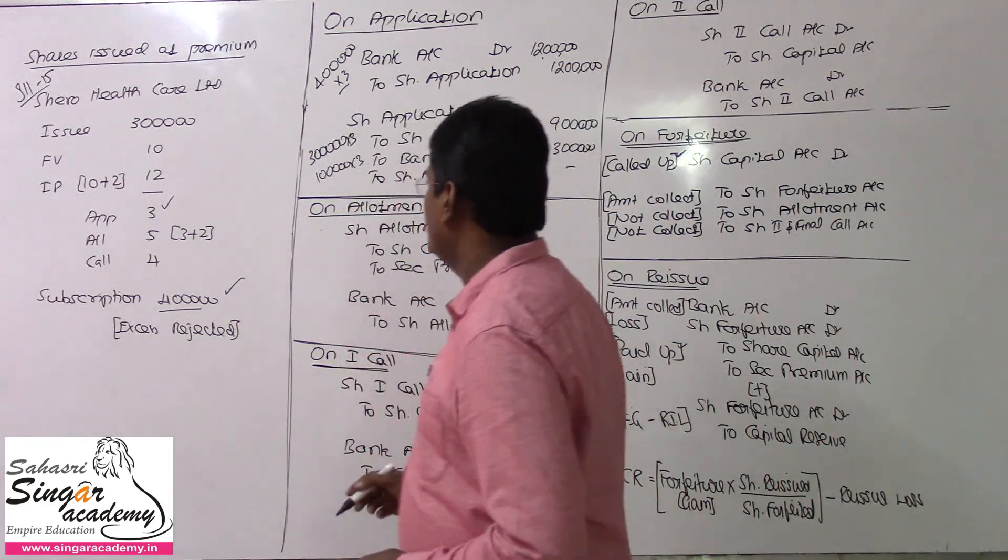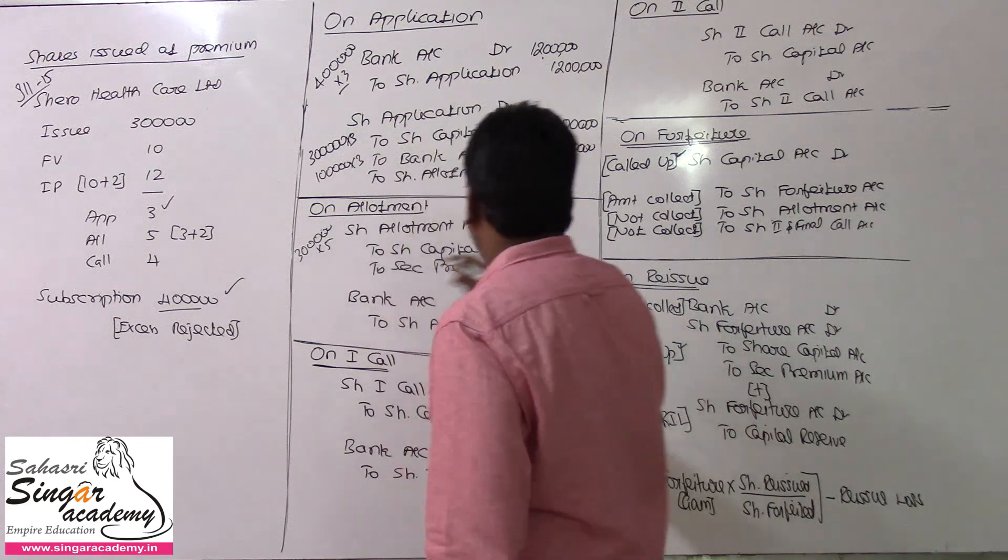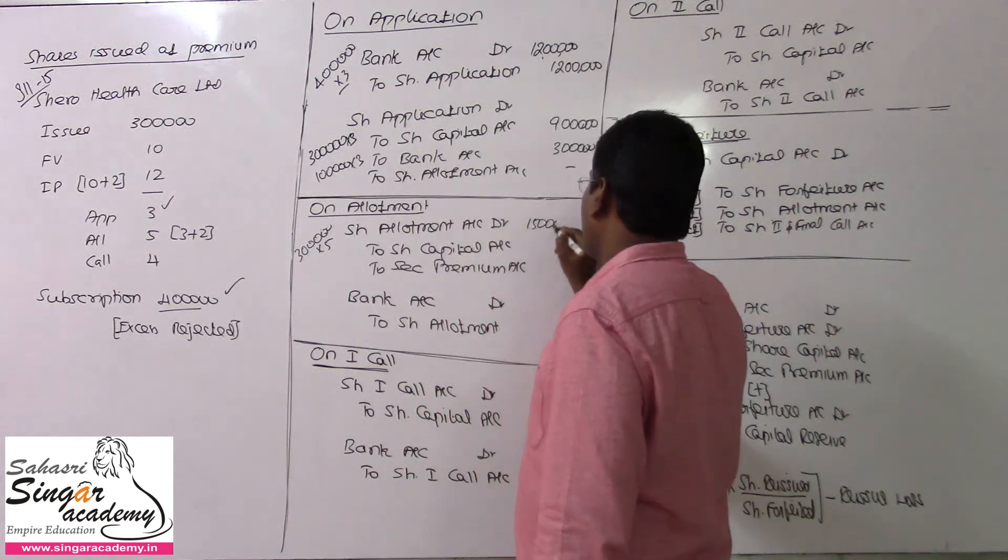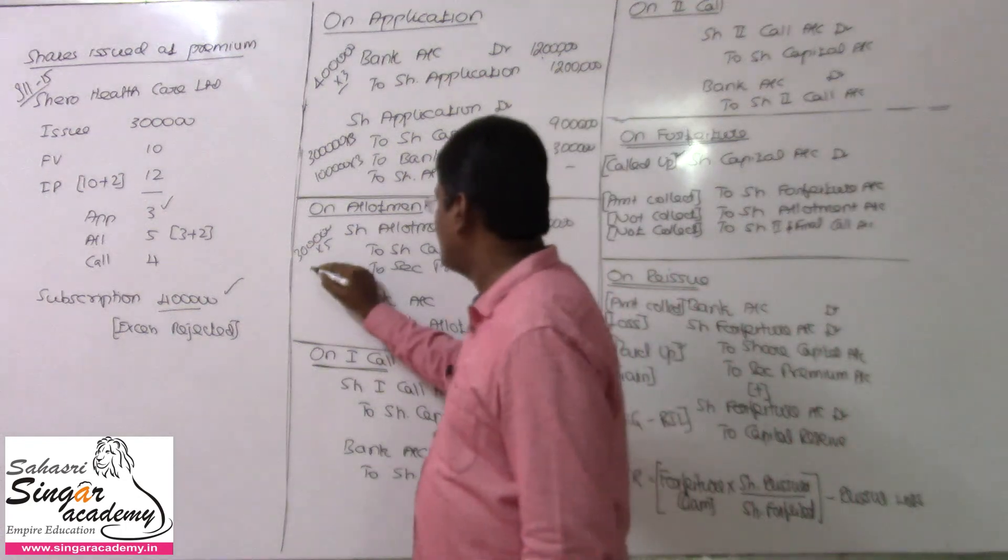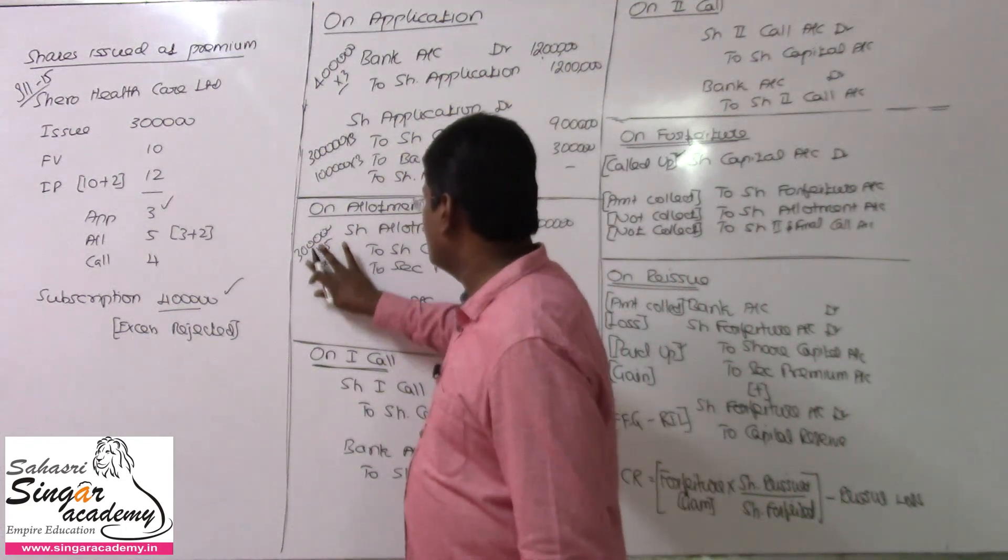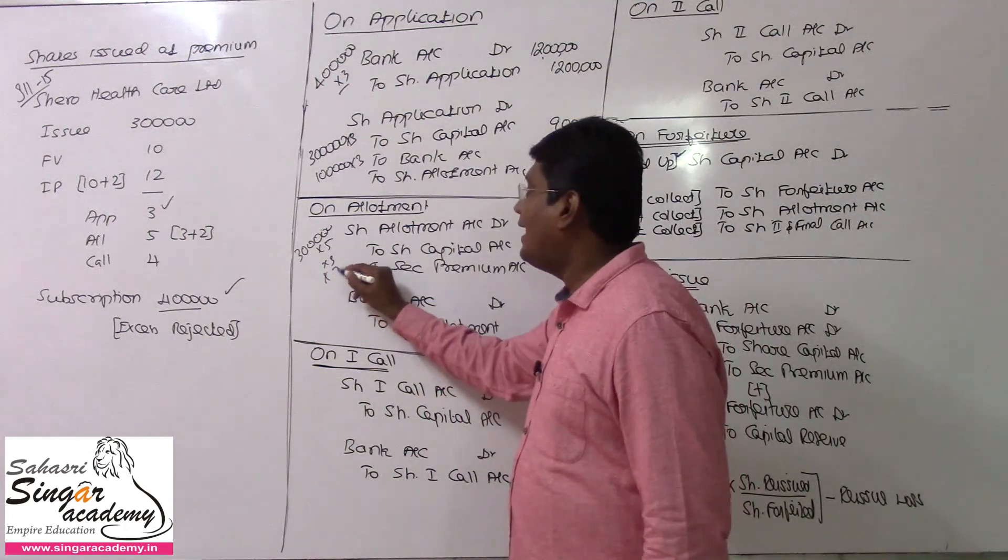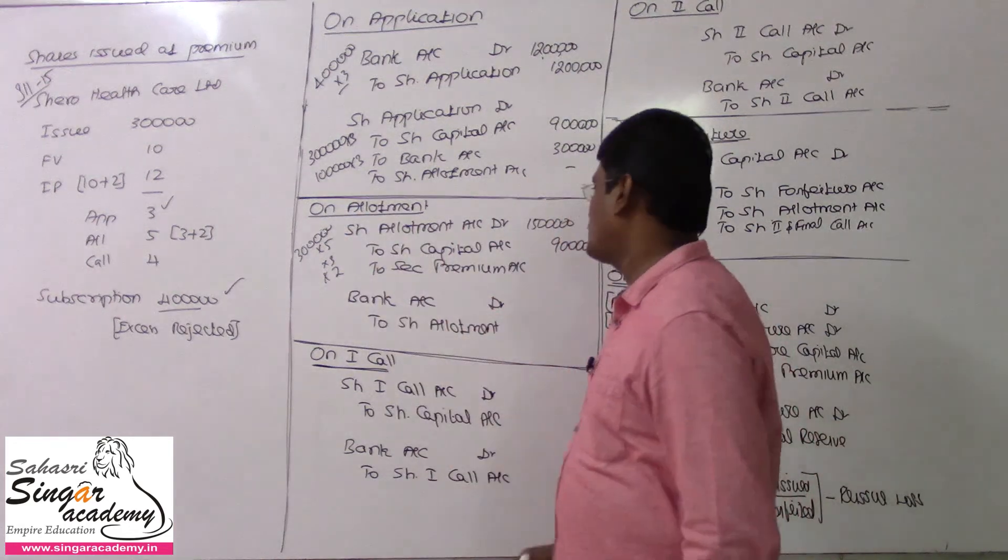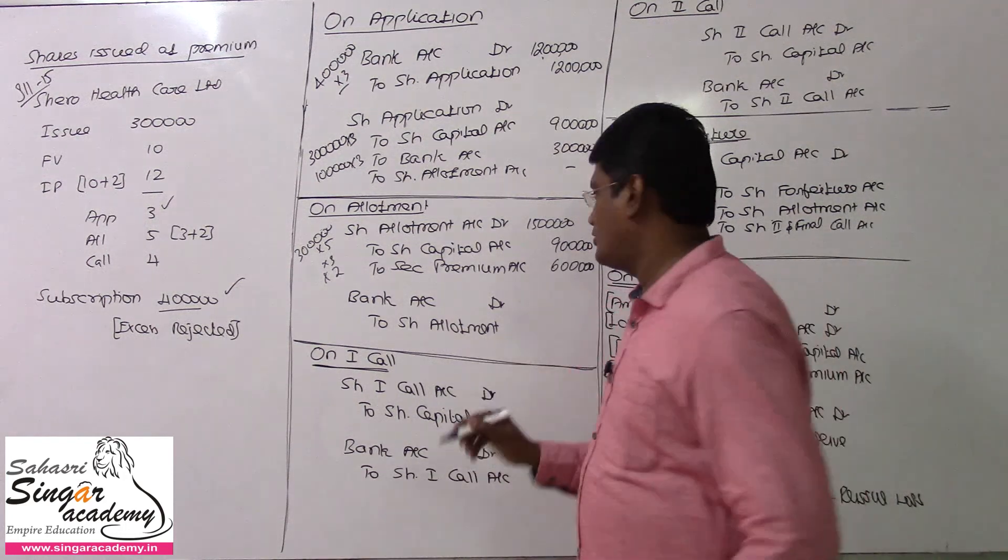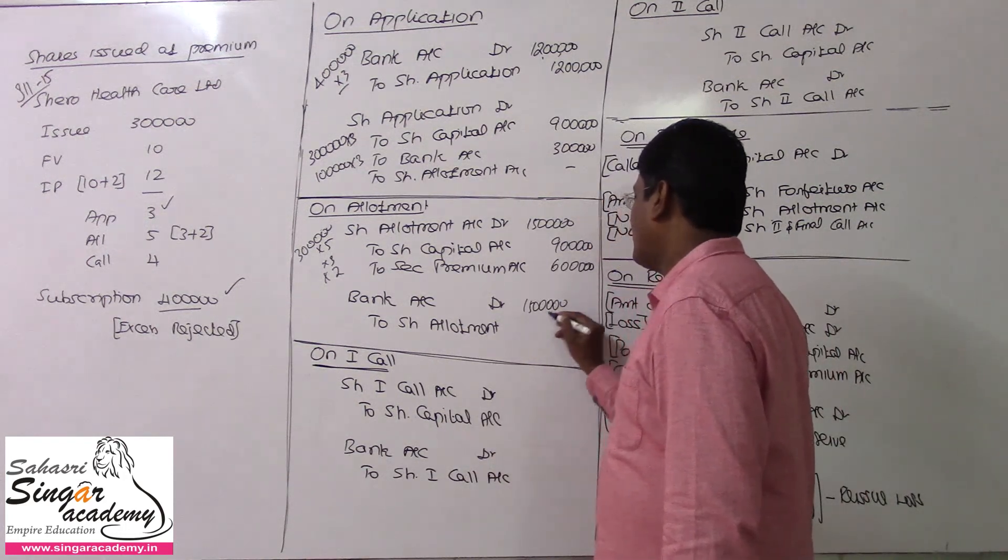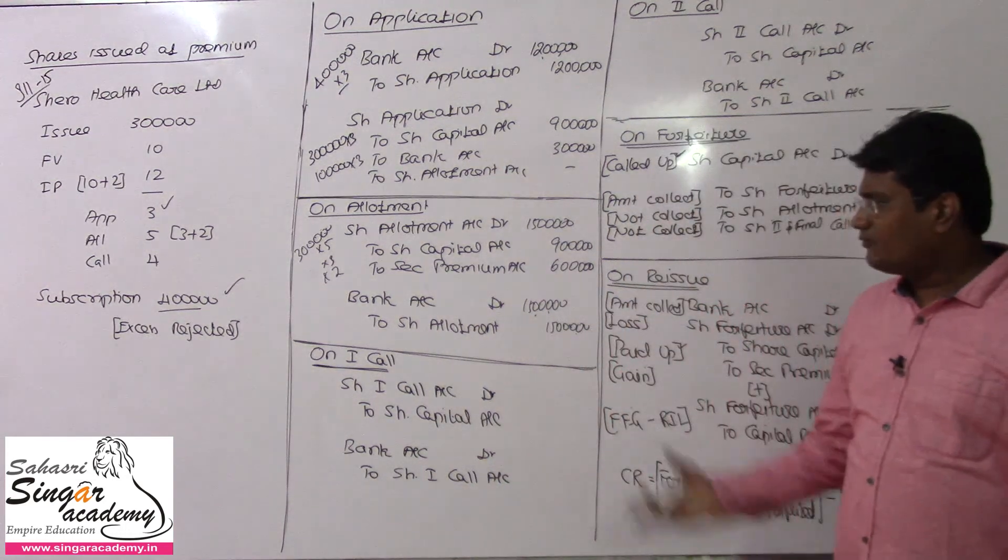At allotment stage, share allotment for 3 lakh shares. Per share allotment amount is 5 rupees, so 3 lakhs times 5 equals 15 lakhs share allotment to share capital and securities premium. For share capital, the amount is 3 rupees, so 3 lakhs times 3 equals 9 lakhs for capital. The 2 rupees is for securities premium, so 3 lakhs times 2 equals 6 lakhs. Of course, the amount collected for share allotment covers both capital and securities premium.